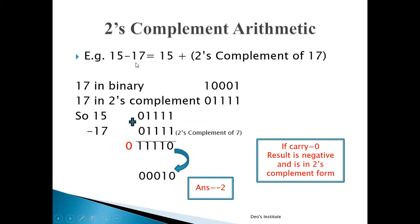Next: 15 minus 17. We take the 2's complement of 17. Seventeen in binary is 10001; its 2's complement is 01111. Adding 15 (01111) and the 2's complement of 17 (01111) gives 11110 with carry 0. Since carry is 0, the result is negative and in 2's complement form. Taking the 2's complement of 11110 gives 00010, which is 2. Since carry was 0, the result is negative: the answer is −2.